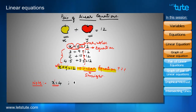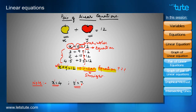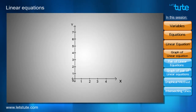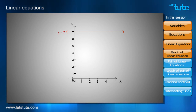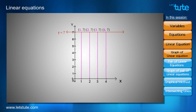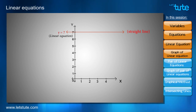Let's consider one more example: y equals 7. Here again there is only one variable, y, with a power of 1. On the graph, this line passes through the point 7 on the y-axis and is parallel to the x-axis, because for every value of x, y equals 7. Since it gives a straight line, it is also called a linear equation.